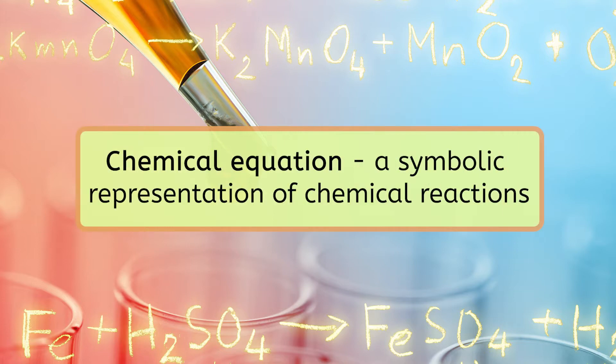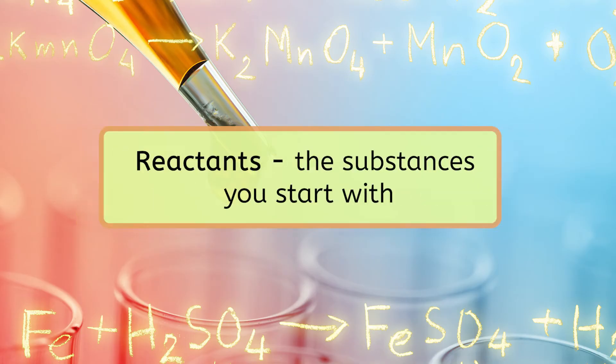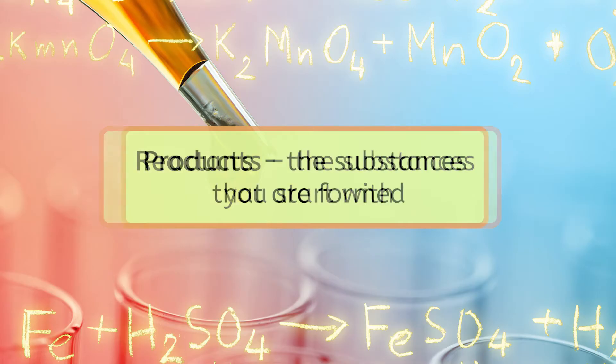A chemical equation is a symbolic representation of chemical reactions. In a chemical equation, the chemical formula for each reacting substance or reactant is written, followed by the substance that is produced or product in the reaction.